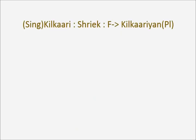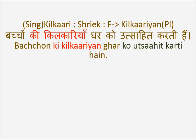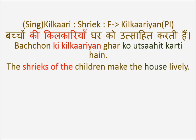Keep revising. Another example: Kilkari means shriek, Kilkariya is the plural form. Bacchon Ki Kilkariya Ghar Ko Utsahit Karti Hai — the shrieks of the children make the house lively. Utsahit means to bring to life, enthusiasm. Kilkariya is feminine plural, so we still use Ki: Bacchon Ki Kilkariya.